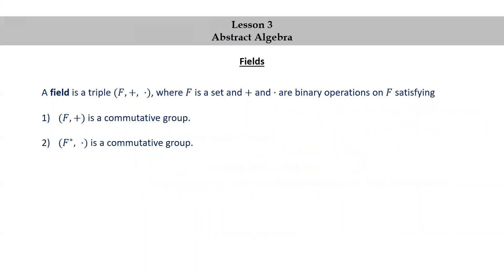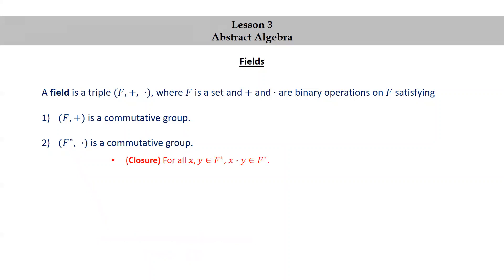The next meta-property is that (F*, ×) is a commutative group. Remember that F* is the set of non-zero elements of F — that is, F* = F \ {0}. So (F*, ×) being a commutative group means we have closure: for all x, y in F*, x × y is in F*.